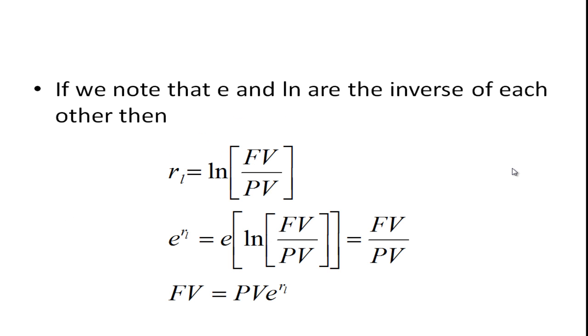If we note that e and ln are the inverse of each other, so I have this equation here. If I took e to both sides of this, I would have e to the RL here equals e to the natural log of the future value divided by the present value, and these would just cancel. The natural log and the e would cancel. So I'd get e to the RL equals future value over present value.